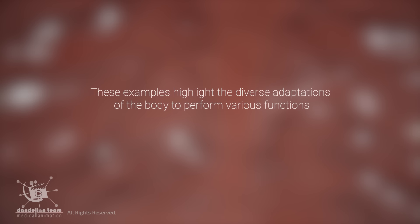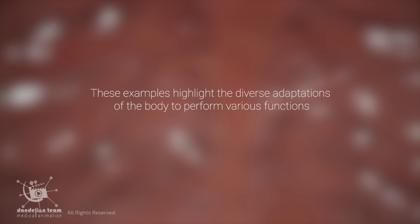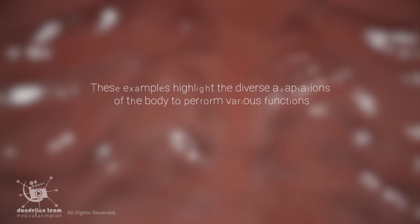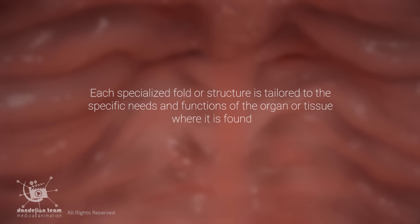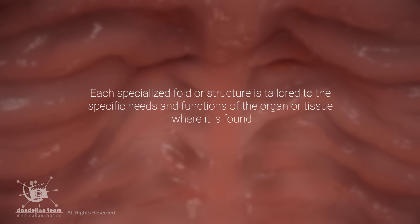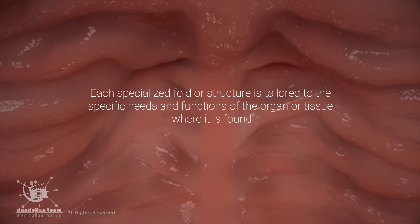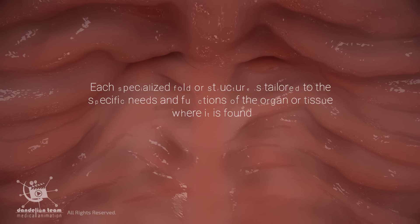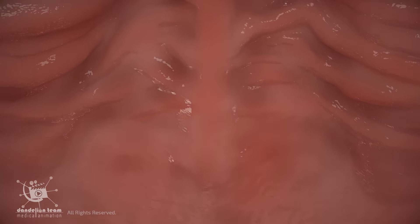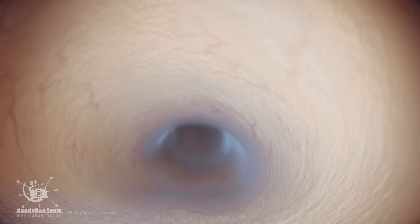These examples highlight the diverse adaptations of the body to perform various functions. Each specialized fold or structure is tailored to the specific needs and functions of the organ or tissue where it is found.